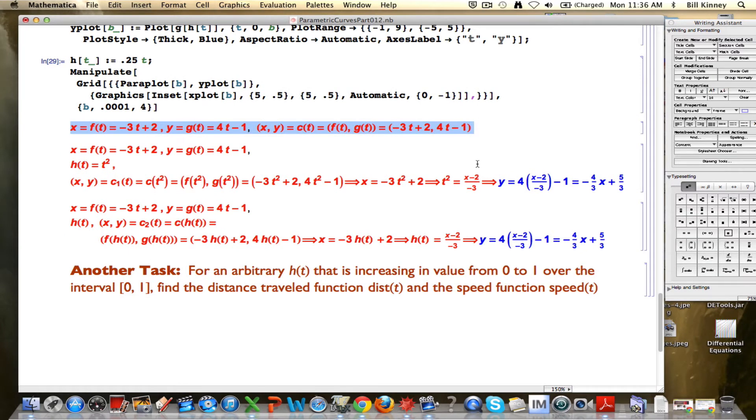F gives you the first coordinate of the point as it moves, and g gives you the second coordinate. C of t combines f and g to give you a point-valued function, giving you the exact location at time t. You can see this is a completely linear function, and therefore we'll model the motion along a straight line at a constant speed.